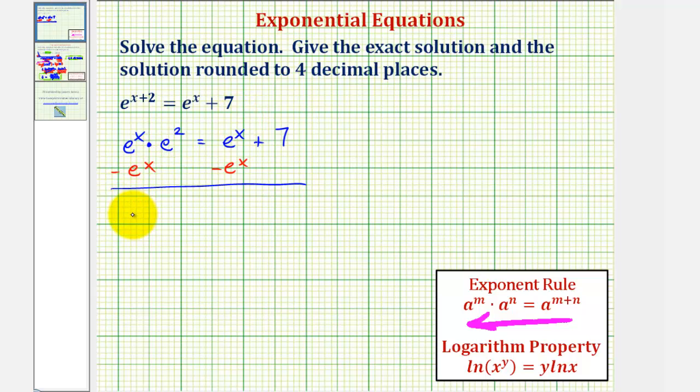So on the left, we have e to the x times e squared minus e to the x. If we factor out e to the x, we're left with e to the x times the quantity e squared minus 1 equals 7.